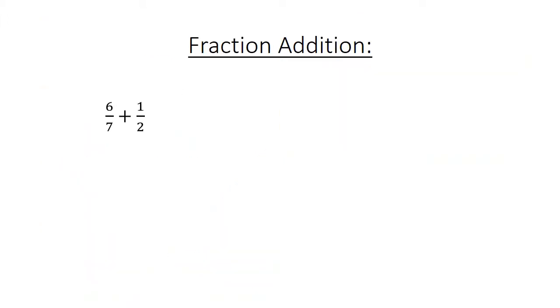Fraction addition. 6 over 7 plus 1 over 2. Find the lowest common multiple. 12 over 14 plus 7 over 14 equals 1 and 1 over 14.